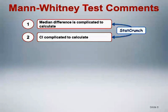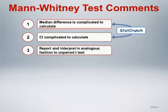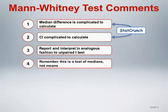Let's finish this section with some closing comments about the Mann-Whitney. Both the median difference and the confidence interval for the median difference are complicated to calculate; we'll leave it to StatCrunch to provide these values, and this will be covered in the StatCrunch demonstration. The results of the Mann-Whitney can be reported and interpreted in an analogous fashion to the unpaired t-test. However, it is important to remember that this is a test of medians, not of means.